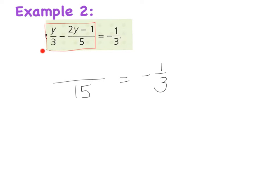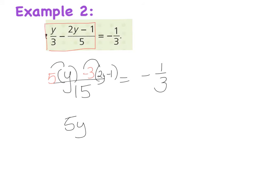Following the same process: 3 goes into 15 five times, so it's 5 multiplied by whatever's on top, which is y. Then remember the sign — it's super important here — minus. And 5 goes into 15 three times, so it's minus 3 times whatever's on top, which is (2y − 1). Expanding: that gives 5y.